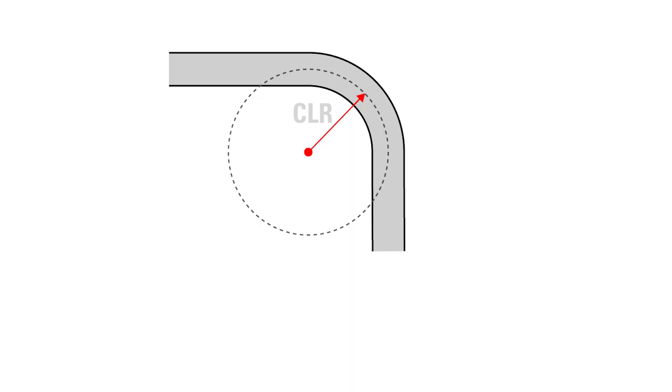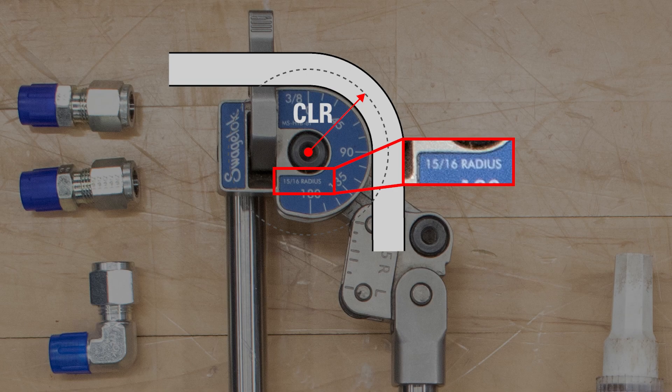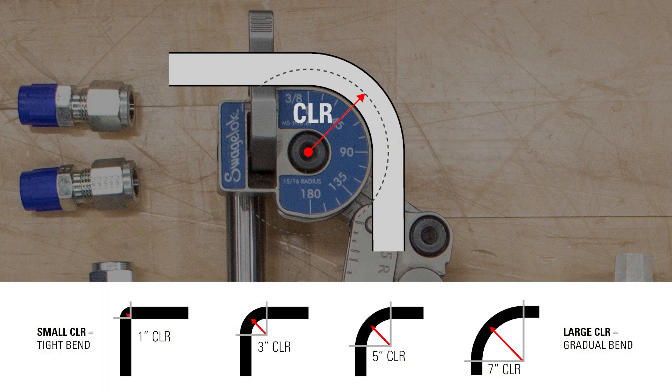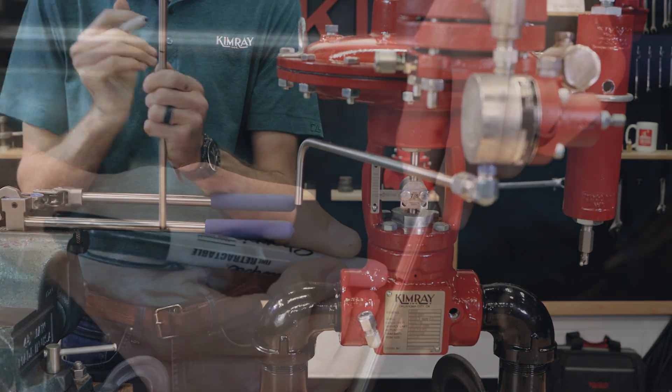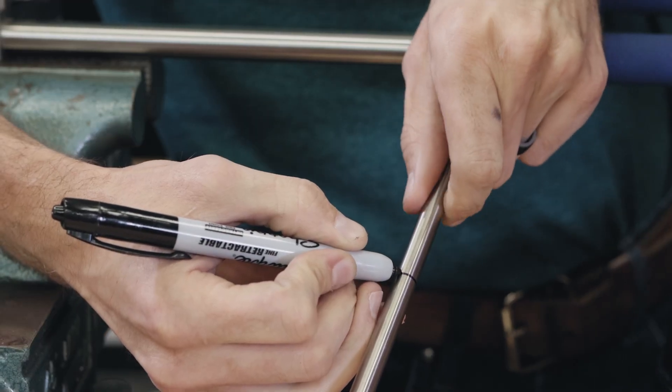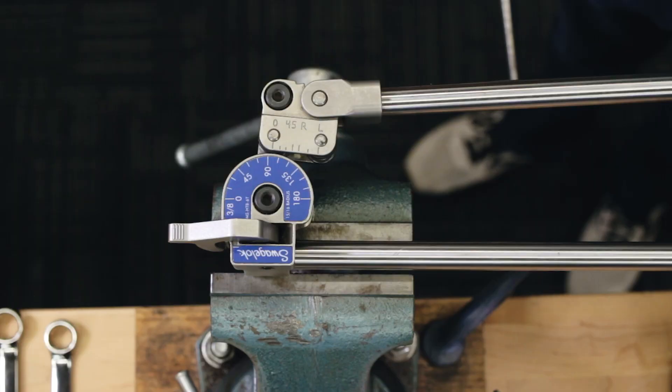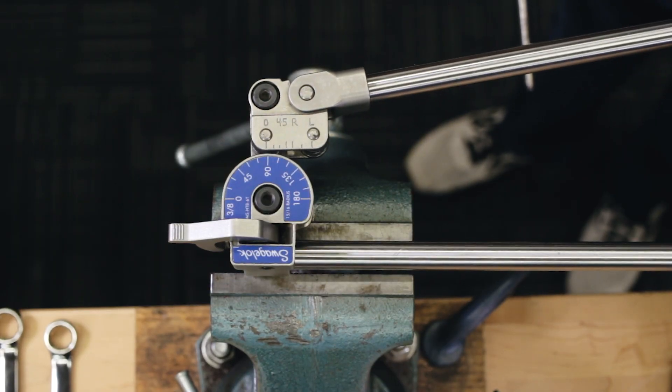The center line radius is determined by the die size of the tubing benders. It can be helpful to mark the whole circumference of the tube so that no matter how it's inserted into the bender, you can still see the line.